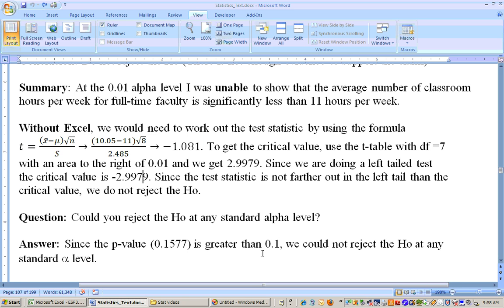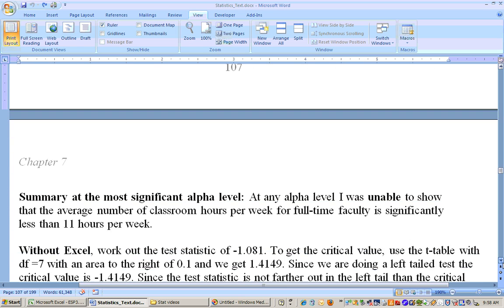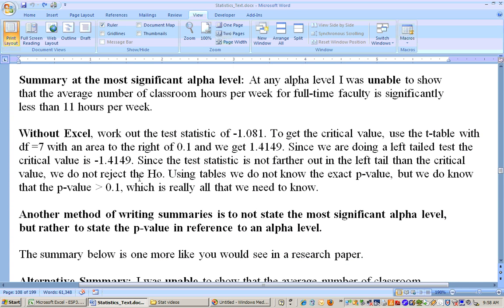Now, could you reject it at any alpha level? We already talked about that. You try 0.1. Look, p-value is greater than that alpha level. You can't reject that null hypothesis at any alpha level. And that's pretty much it with that. And this is talking about, again, doing it without Excel.